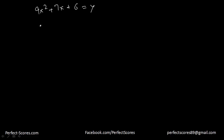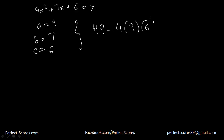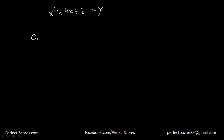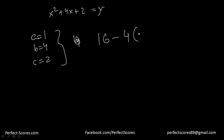Let's pick up another one: 9x squared plus 7x plus 6 equals y. So a is 9, b is 7, c is 6. b squared is 49 minus 4 times 9 times 6, which is less than 0 — I am going to have two imaginary roots. Let's see another one: x squared plus 4x plus 2 equals y. Here a equals 1, b equals 4, c equals 2. b squared minus 4 times a times c is greater than 0 — two real distinct roots.